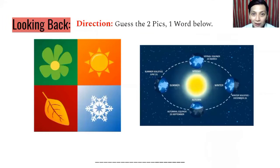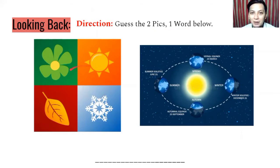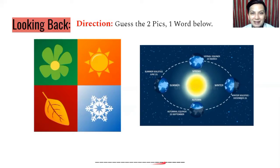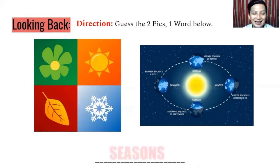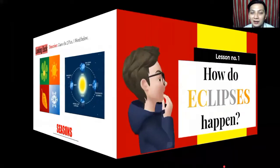As we look back, all you have to do is guess the two pictures here to form one word below. So we have this picture and this picture — can you guess what the answer is, related to our previous topic? The correct answer is seasons. That was the last topic we discussed before we talk about eclipses.